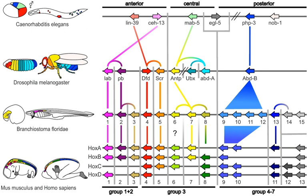A key early discovery was of homeotic genes that regulate development in a wide range of eukaryotes. The field is characterized by some key concepts which took evolutionary biologists by surprise.